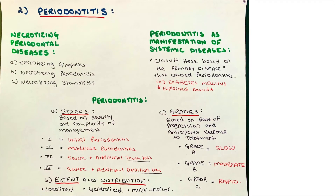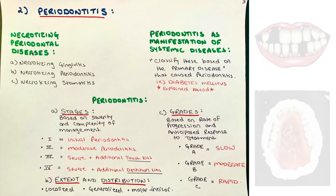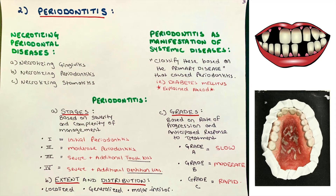The second category is periodontitis, split into three subcategories: necrotizing periodontal disease, periodontitis as a manifestation of systemic disease, and periodontitis itself. Necrotizing periodontal disease — where it looks like the bugs are eating their way inside — includes necrotizing gingivitis, necrotizing periodontitis, and necrotizing stomatitis. This whole category is equivalent to the old ANUG and ANUP categories. Periodontitis as a manifestation of systemic diseases must always be classified by the primary disease, such as periodontitis as a manifestation of diabetes mellitus.